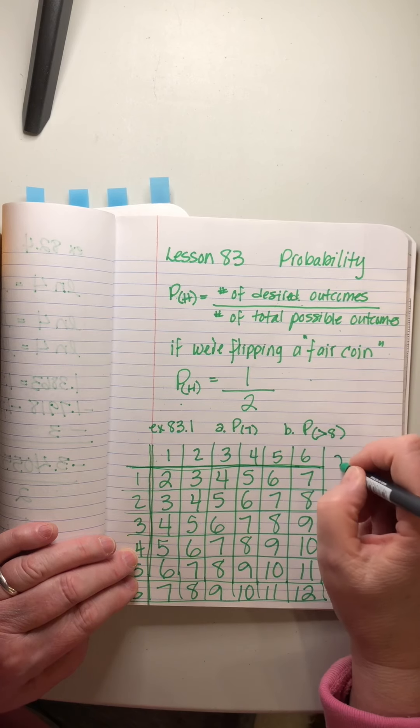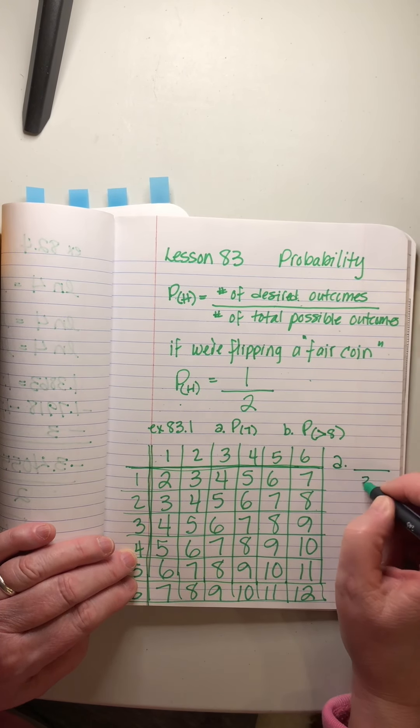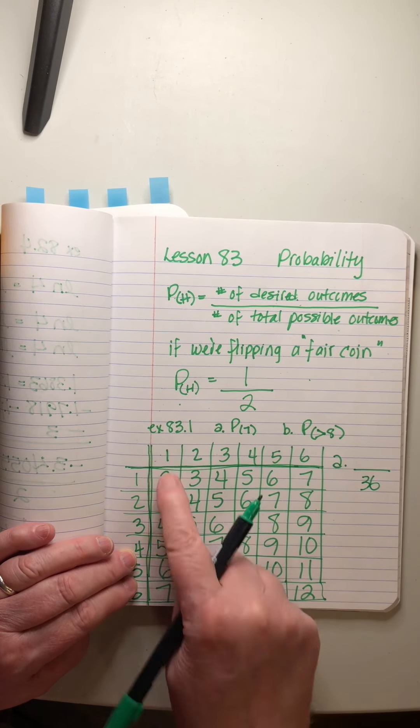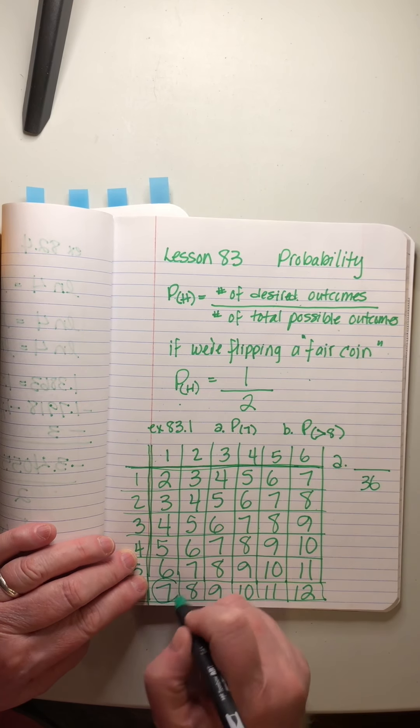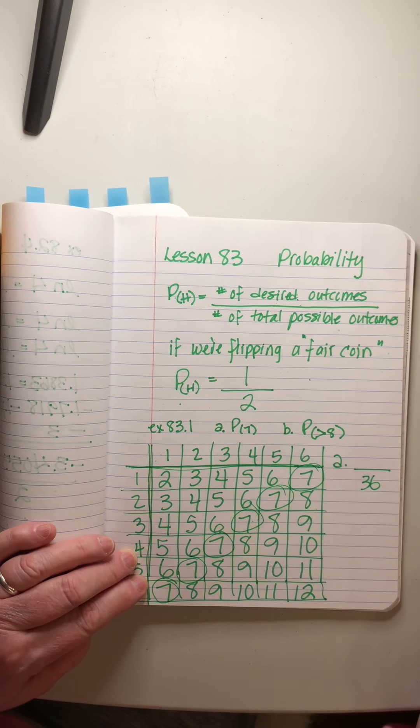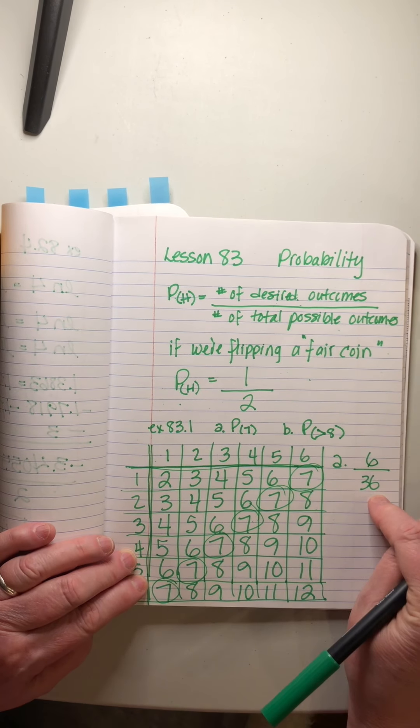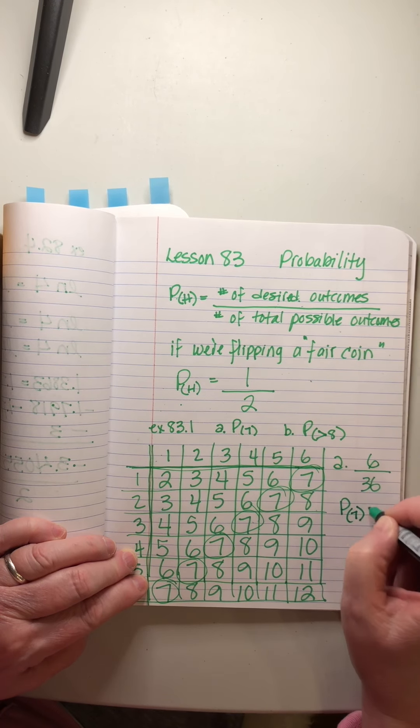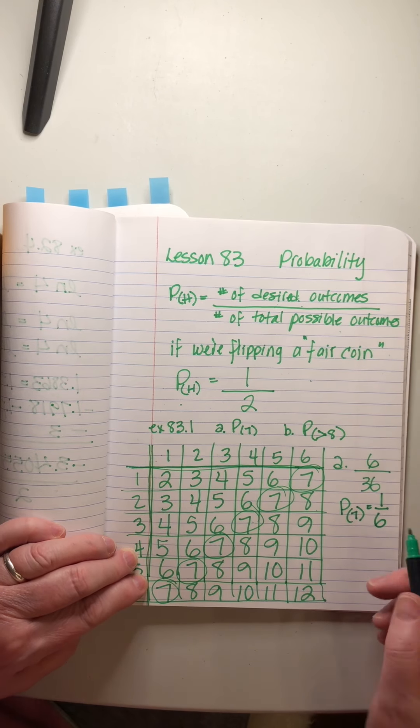These are all the different possible outcomes when you roll two dice, and we need to have them all written down in front of us because we need to count them. There are 36 outcomes, right? So let's look at a: what's the probability of rolling a seven? Well, there's 36 total possible outcomes, 36 different combinations, six times six. We want a seven, so let's look at where our sevens are. There's one, two, three, four, five, six ways to roll a seven. So the probability of rolling a seven is six out of 36, or one out of six.